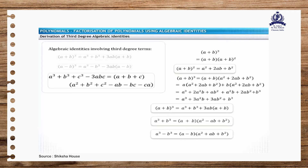You can use a similar approach to derive the second identity. You can express this identity as the difference of two cubes. Please note that we will not derive the third identity as it is not in the scope of your syllabus. However, please remember this identity, as you may have to apply it for factorizing polynomials.